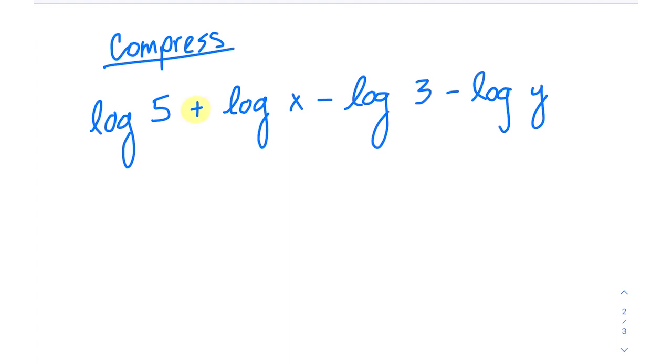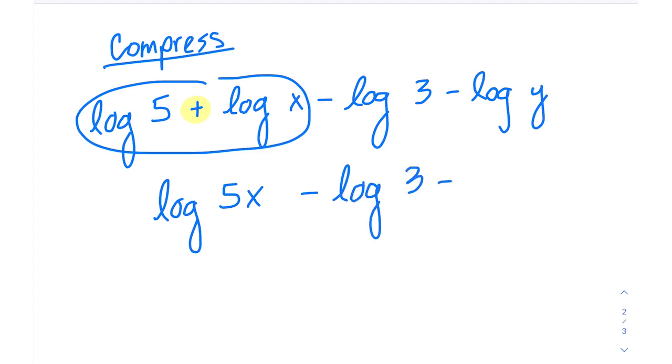So addition is going to indicate that when you bring them inside the same log function they will be multiplied. So here to compress just these first two, we'll start small. This will become log of 5 times x when we compress it into a single log function. And we can write everything else as is.